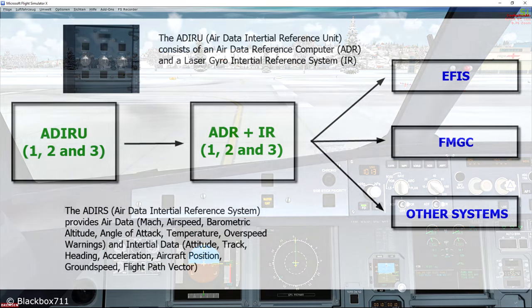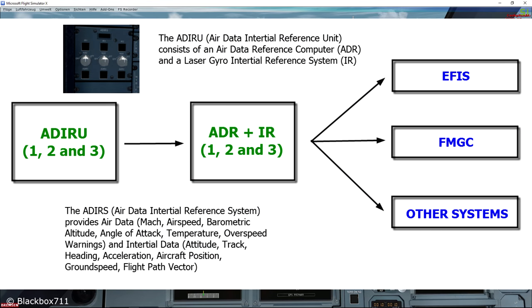The ADIRS, the Air Data Inertial Reference System, consists of three identical ADIRU Air Data Inertial Reference Units. Each ADIRU consists of one Air Data Reference Computer, ADR for short, and one Laser Gyro Inertial Reference System, IR for short. Each ADIRU provides important information to the EFIS, FMGCs and also other systems.